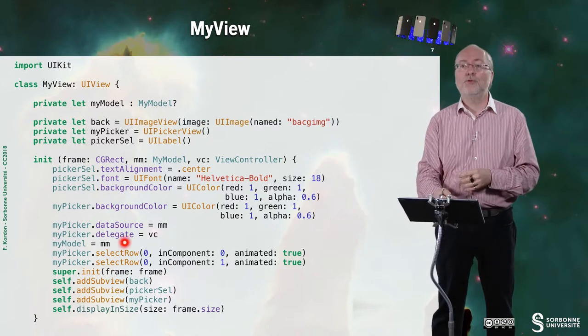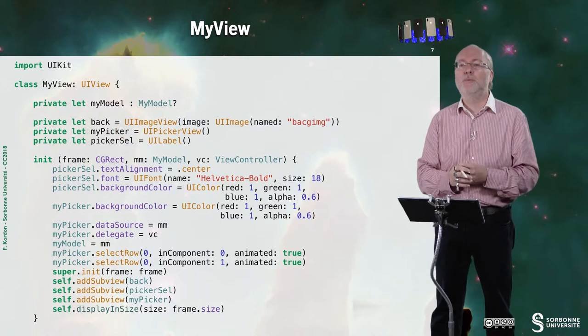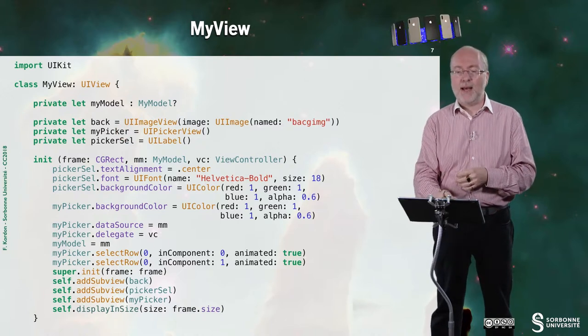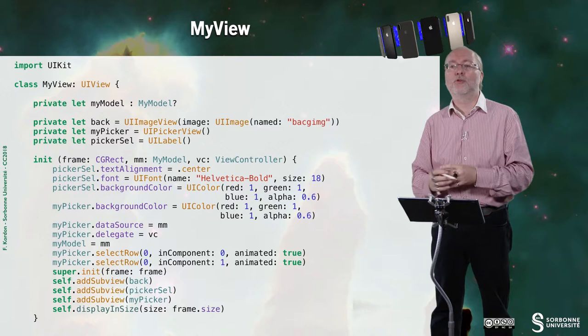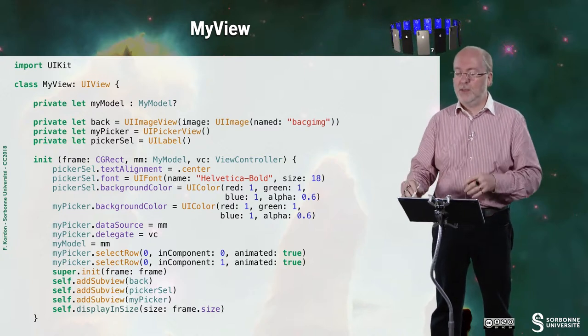So you do that here. The rest of the code you know it. Here I also copy into MyModel because I need to keep it for later. Then I pre-select the current component. And then I do the add subview as usual.